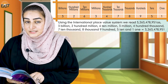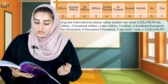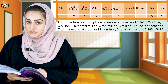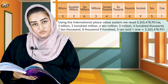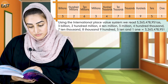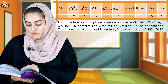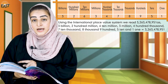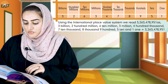Read with me: three billion, two hundred sixty-three million, four hundred seventy-eight thousand, nine hundred and fifty-one. This is the word form for our second example.